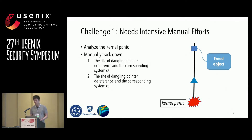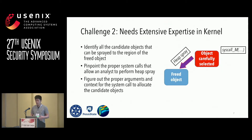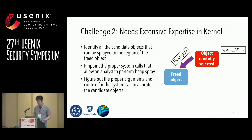It is not difficult to observe that in the whole exploitation process, the first challenge is we need to put extensive manual effort in analyzing the kernel panic and tracking down this critical information. The second challenge is we need extensive expertise in the kernel — we need to inspect all kernel objects for suitable candidates, find a system call to allocate such objects, and figure out a proper way to perform effective heap spray, which requires deep understanding of the Linux kernel.